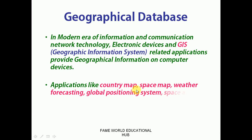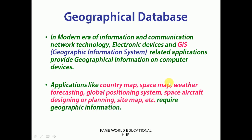Applications like country map, space map, and weather forecasting — we can see that temperature readings such as 23 degrees centigrade or forecasts like rain tomorrow — these kinds of information, along with global positioning system, spacecraft designing or planning, and site maps, require geographical information. These types of data are basically stored in the geographical database. I also want to mention that in upcoming videos I will discuss the spatial database, which is a very important and interesting topic of advanced DBMS.